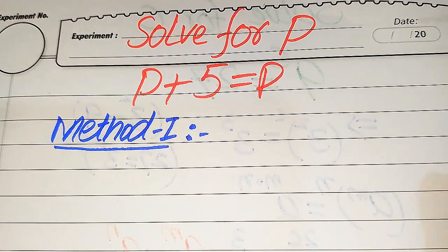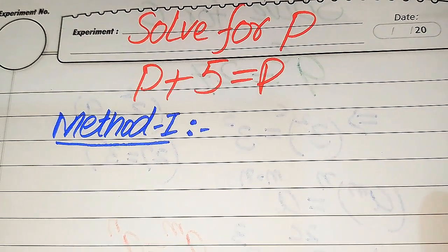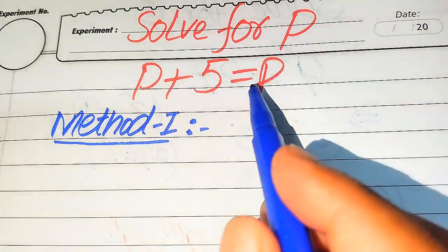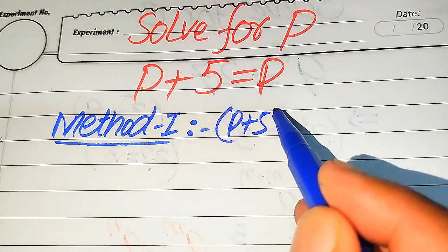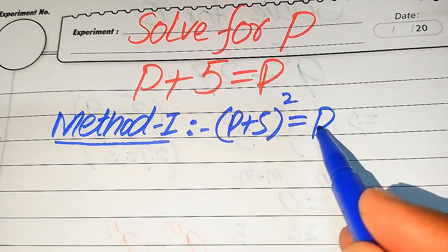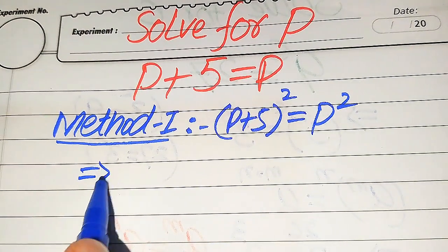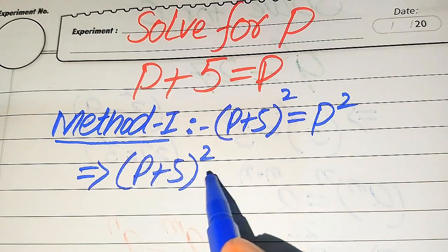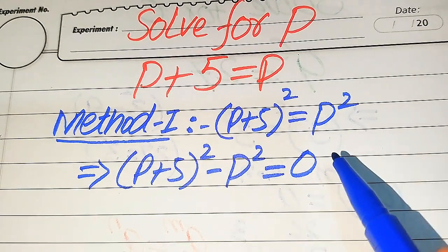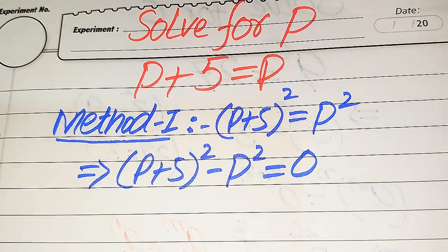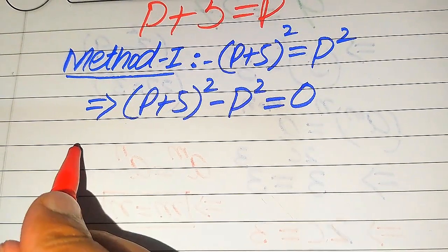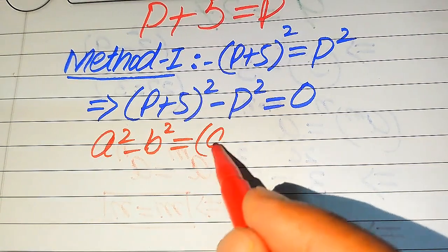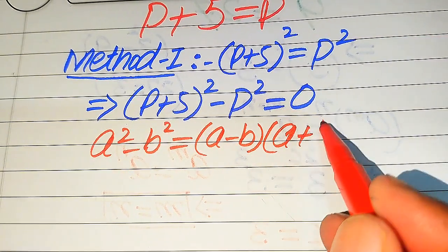To find the values of p, we first need to take squaring on both sides of this equation. When you take squaring, it will be written as (p+5)² = p². In the next step we move p² to the left hand side, giving us (p+5)² − p² = 0. In the next step we use the nice algebraic formula: a² − b² = (a−b)(a+b).